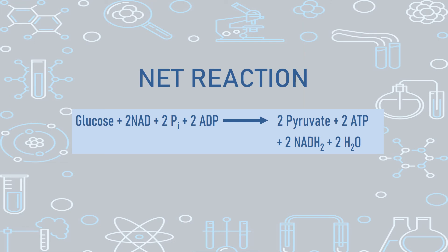The net reaction from one glucose gives two molecules of pyruvate. Four ATPs are produced but two are utilized, so the net ATP obtained is only two. We also get two NADH2 molecules, which participate in the electron transport chain to provide even more ATPs. There is also release of two water molecules. So the net products of the EMP pathway per glucose are: two pyruvates, two ATPs, two NADH2, and two water molecules.